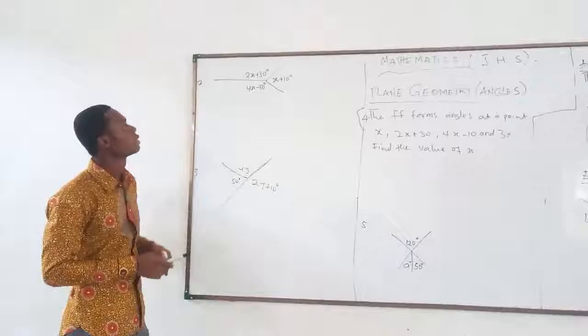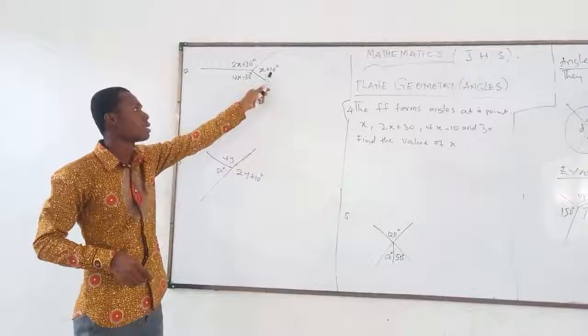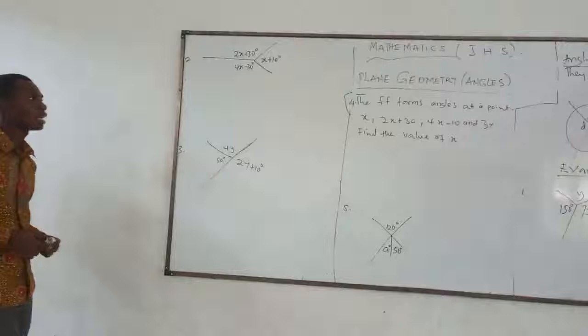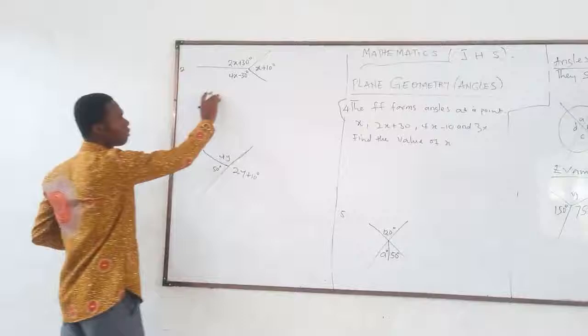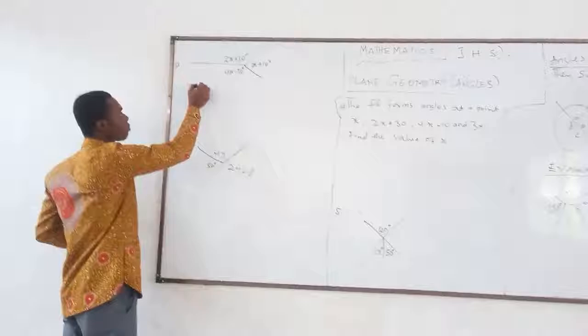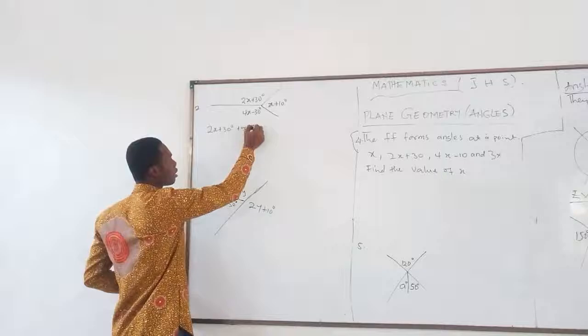We have 2X plus 30 degrees in one part, X plus 10 degrees in another part, and 4X minus 30 degrees. We have to find the value of X. As usual, sum of angles equals 360 degrees. So 2X plus 30 degrees plus X plus 10 degrees plus 4X minus 30 degrees equals 360 degrees.